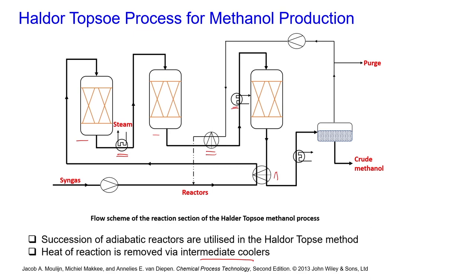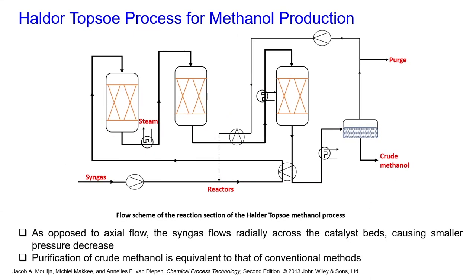The remaining process is similar to ICI, but the important difference is that in the ICI process the inlet stream enters the reactor axially, whereas in the Haldor Topsøe process it enters radially across the catalyst bed, causing a lower pressure drop. Purification of crude methanol is similar to that of the ICI process. The differences are: a series of adiabatic reactors, radial flow direction, and intermediate coolers to maintain the temperature profile.